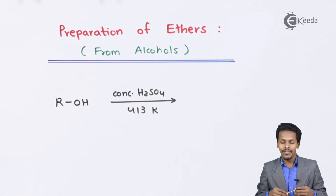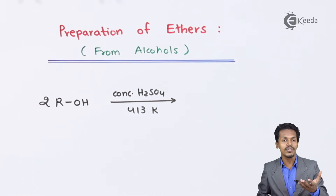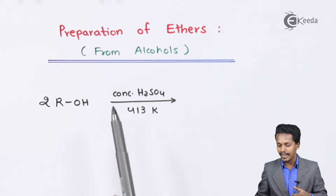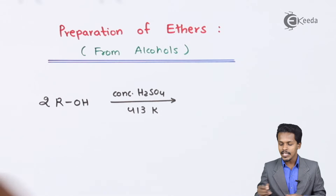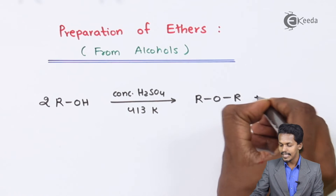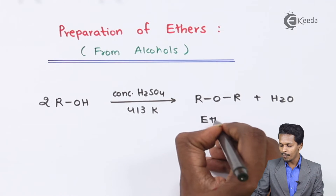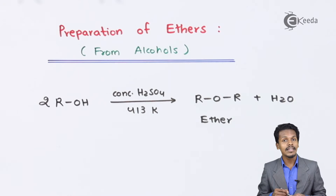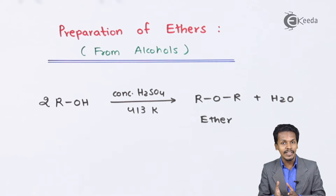In this case we are considering the alcohol in excess amount. Two moles of alcohol are treated with concentrated H₂SO₄ at 413 Kelvin. The product we get is ROR, that is an ether, along with a water molecule. This ether obtained is a simple ether.